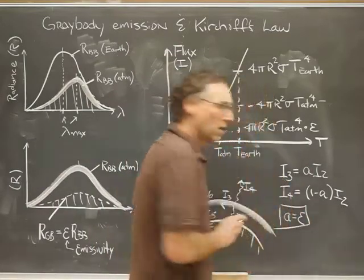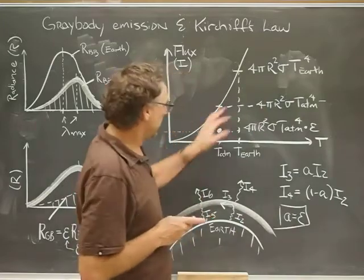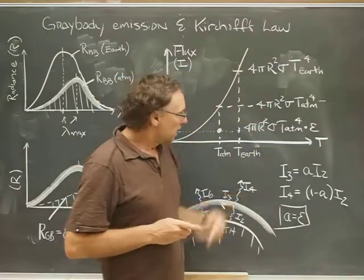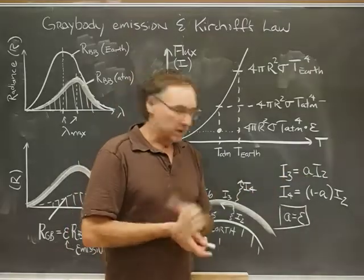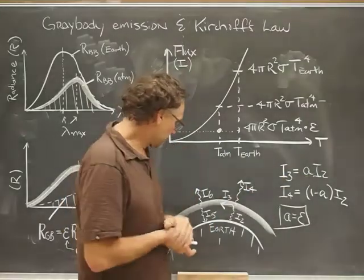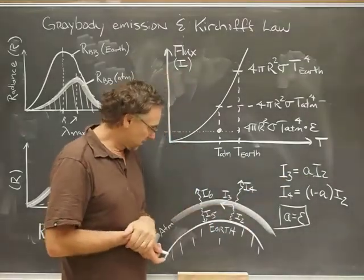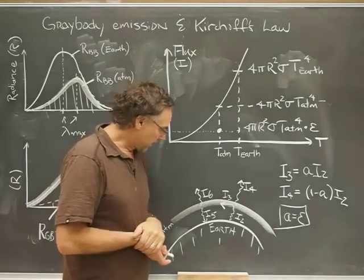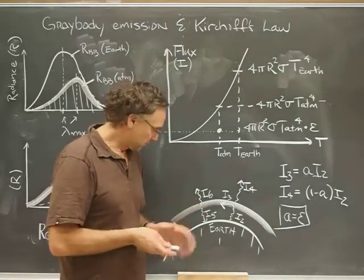Which means in this case if we thought we had an emissivity of the atmosphere of say 0.4, then we would say that the absorptivity is 0.4 as well. And then we have all the terms in our radiative isothermal atmosphere picture.